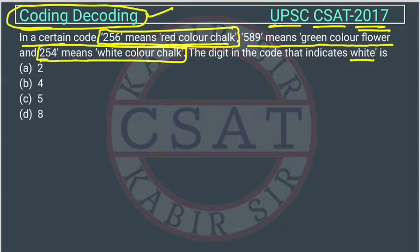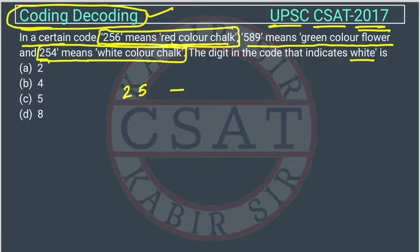So how do we normally solve this? We look at what is common: 256 and 254 — here we have two digits in common: 2 and 5. And in the words, we have red color chalk and white color chalk, so color and chalk are common. So 2 and 5 will represent color and chalk.